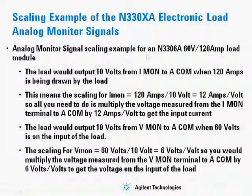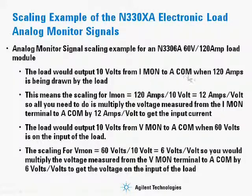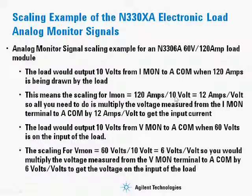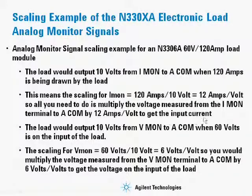Here's an example of scaling for the analog monitor signal using an N3306A load module, which is 60 volts at 120 amps full scale. The load would output 10 volts from the Imon to ACOM terminals when 120 amps is being drawn. To scale this, Imon scaling equals 120 amps divided by 10 volts, which equals 12 amps per volt. Multiply the voltage measured from the Imon terminal to ACOM by 12 amps per volt to get the input current.